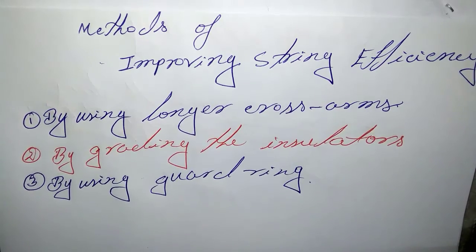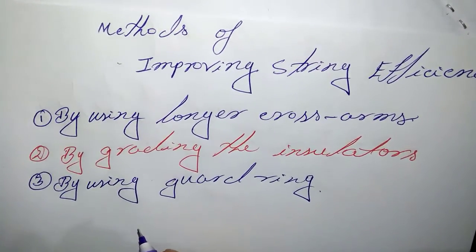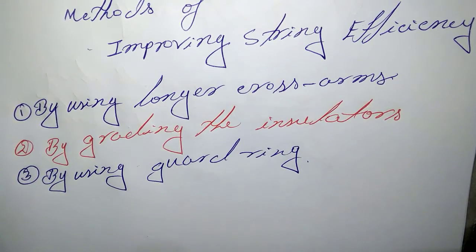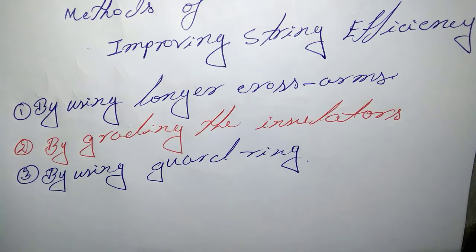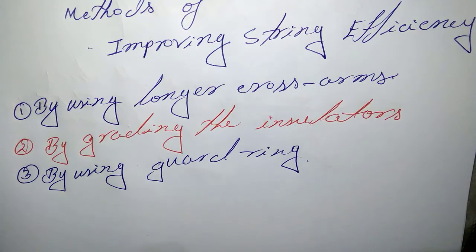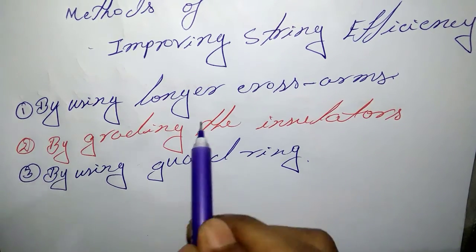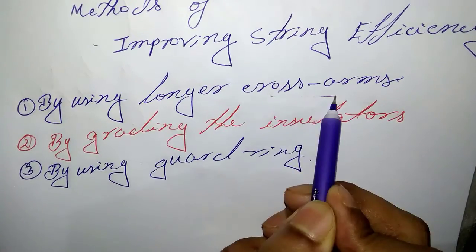The voltage decreases progressively as the cross arm is approached. If the insulation of the highest stressed insulator breaks down, or flashover takes place, the breakdown of other units will take place in succession.